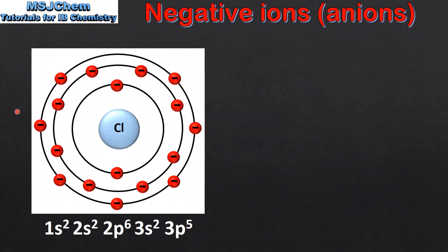Next we look at negative ions. Here we have a chlorine atom. Chlorine has an atomic number of 17, which means it has 17 protons in its nucleus. By looking at the electron configuration we can see that it also has 17 electrons.